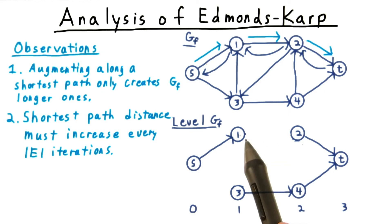So if each augmentation deletes one edge from the level graph, then certainly after E iterations, the level graph would be empty. And then clearly there are no ST paths in this level graph. And so we need to build a bigger one that includes longer paths in order to be able to augment any further.